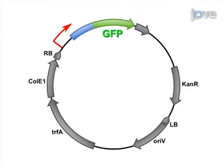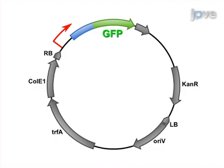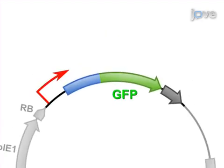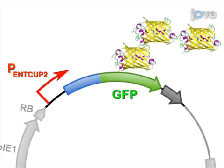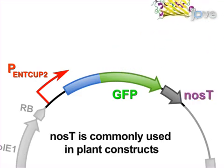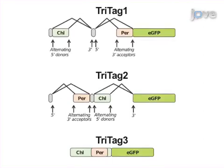In this case, the constitutive promoter P-ENTCUP2 drives the expression of GFP, which is followed by the nopaline synthase terminator, or NOS-T.